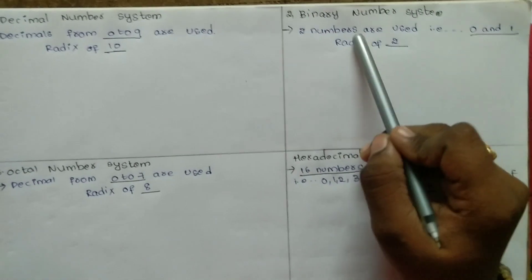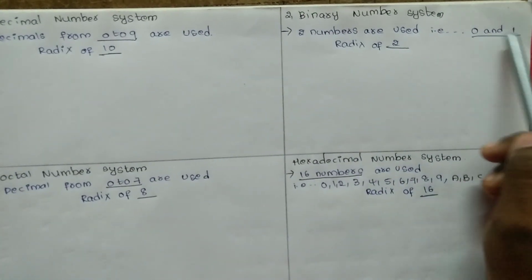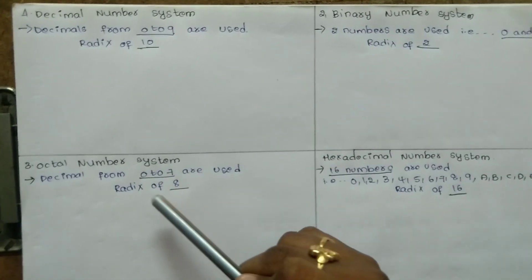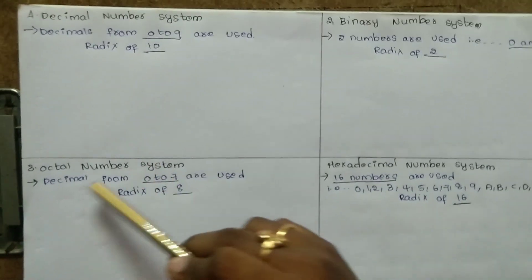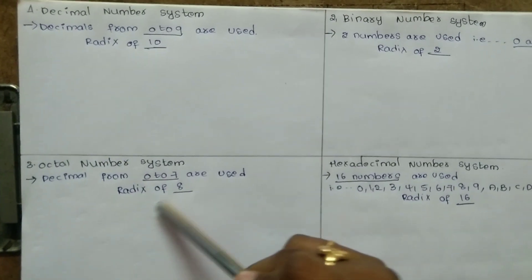Binary Number System uses only two numbers, that is 0 and 1. Its radix is 2. And octal number system is 0 to 7, total 8 numbers. So we call it octal, and radix is 8.